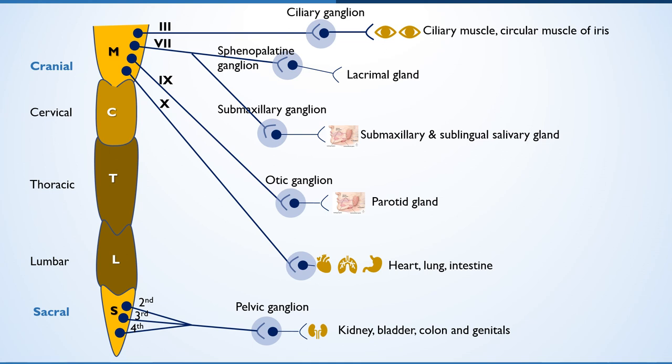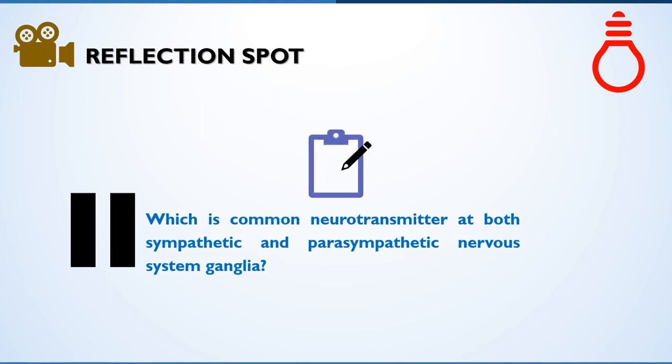The cell bodies of sympathetic preganglionic neurons are located within the lateral horn of the first thoracic to the third lumbar segments of the spinal cord; hence it is termed as thoracolumbar outflow, which we will discuss in the next part. Before moving on, here is a question for you: stop the video and write down the answer — what is the common neurotransmitter at both sympathetic and parasympathetic nervous system ganglia?